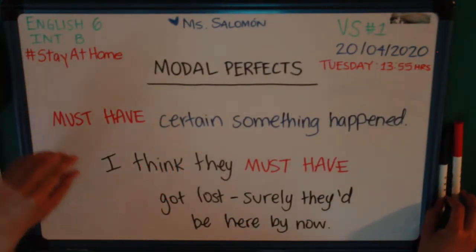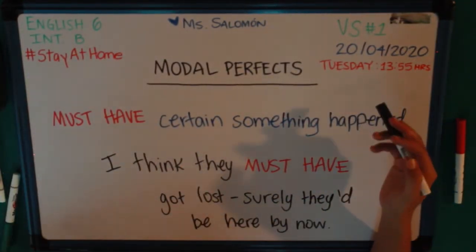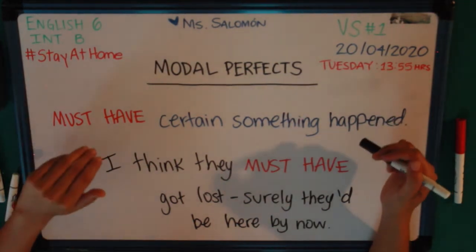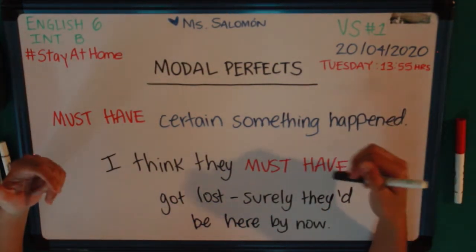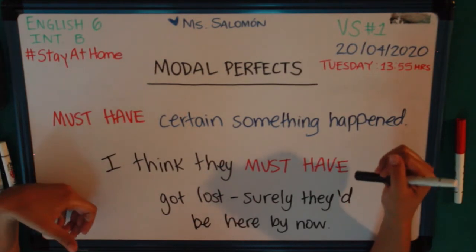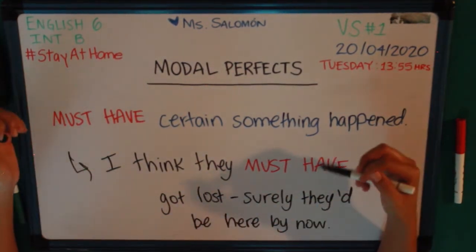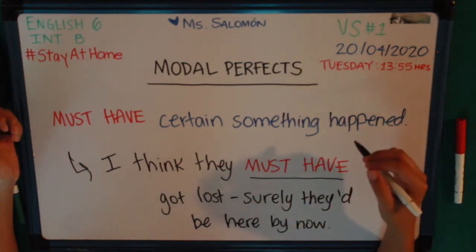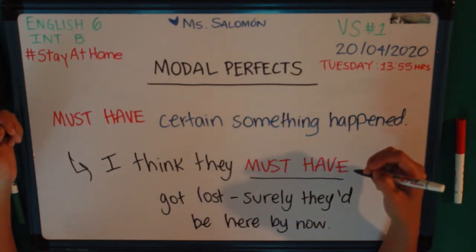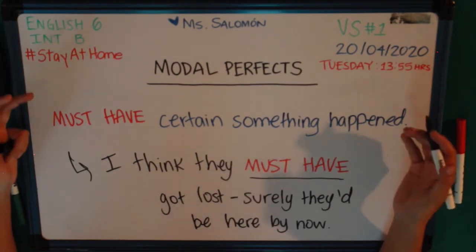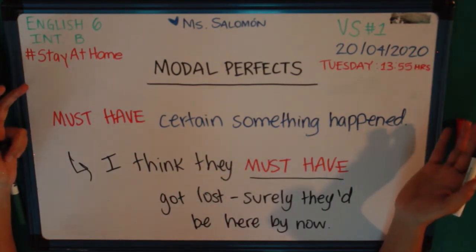Let's see the modal perfect 'must have.' We use the modal perfect 'must have' to express that we are certain that something happened in the past. For example, if I say 'I think they must have got lost, surely they'll be here right now,' what I'm saying is that I'm certain or I'm sure that they got lost.